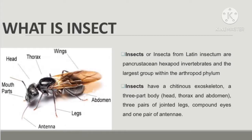Insects are invertebrates, or animals that do not have a backbone. In fact, insects do not have any bones at all. Instead, they have a hard outer shell called an exoskeleton that gives them their structure.